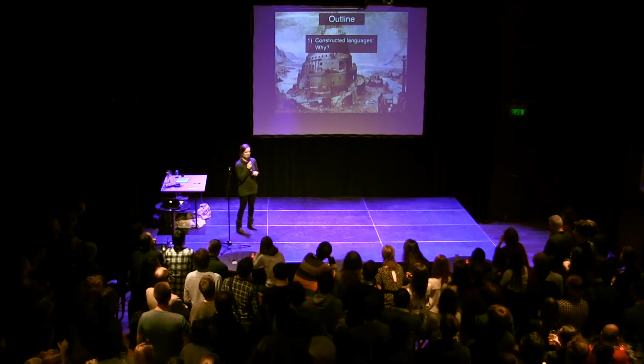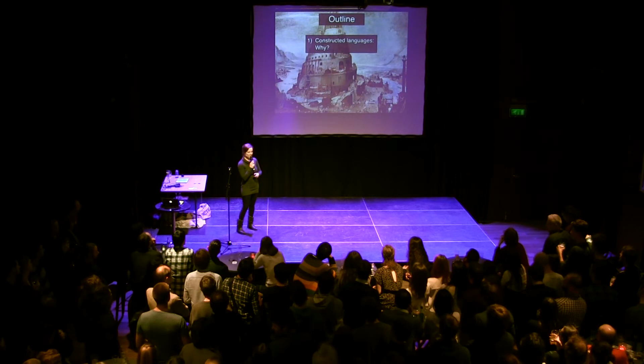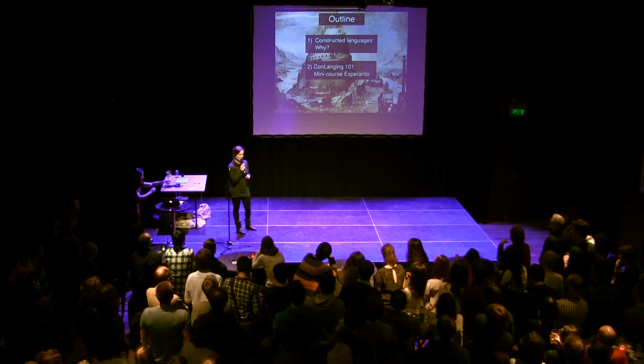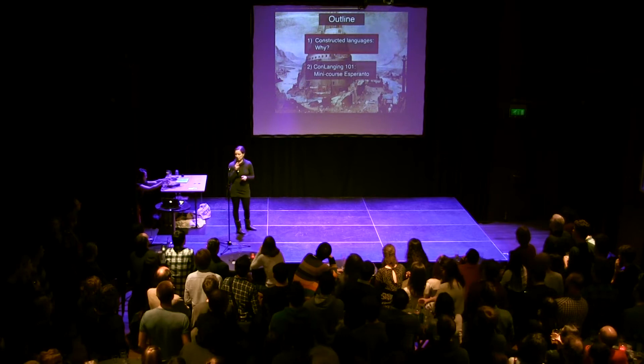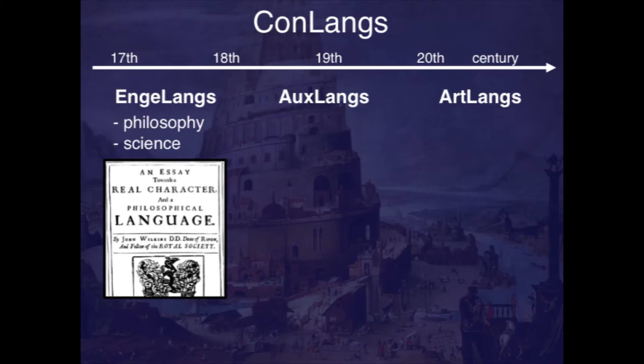So this will majorly be a huge collection of fun languages that people invented and reasons for it. And at the end, I will give you a very, very short crash course in Esperanto. So why do people invent languages? There are three major groups of constructed languages — conlangs means constructed languages — Engelangs, auxlangs, and artlangs.